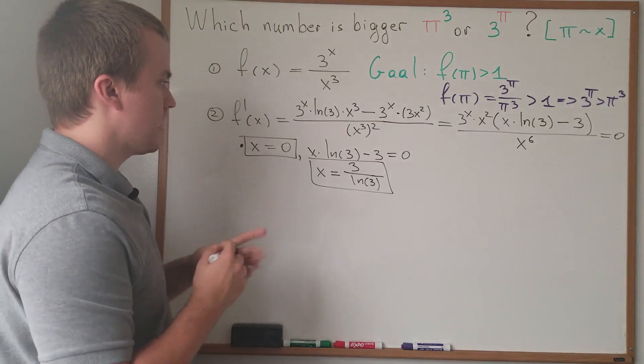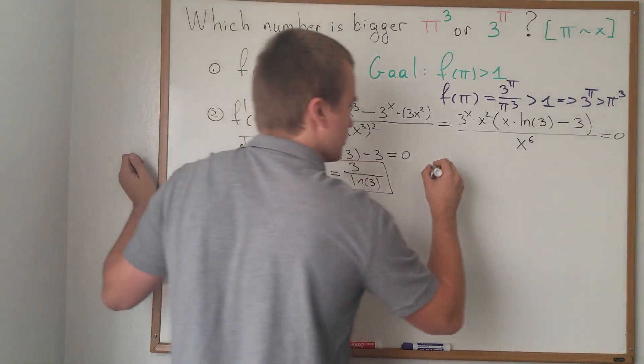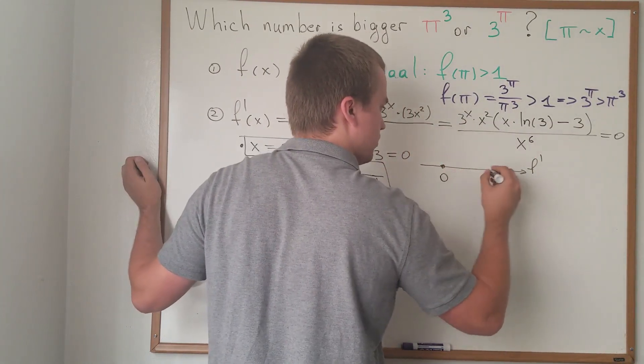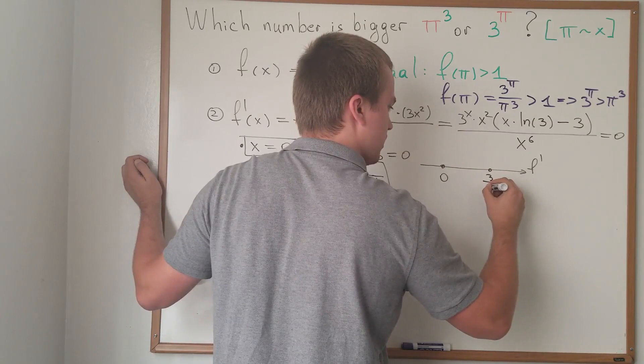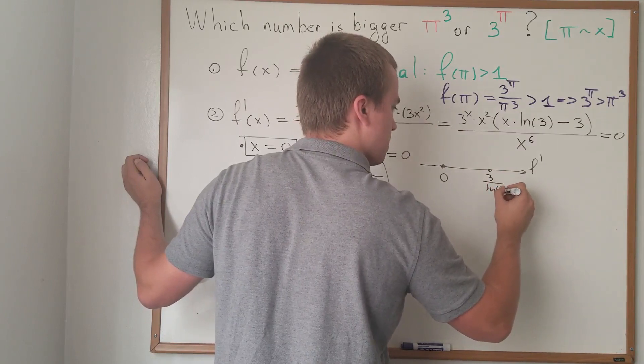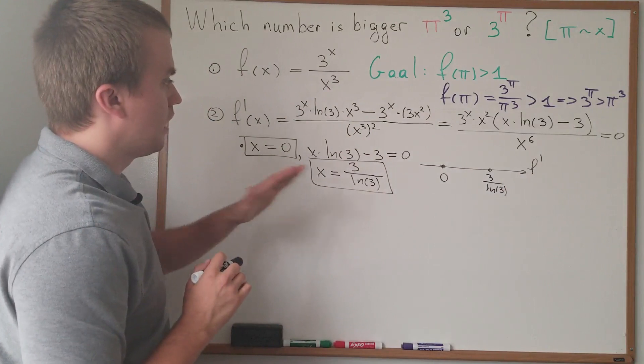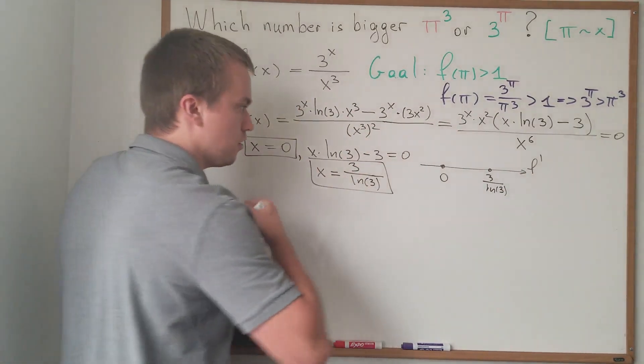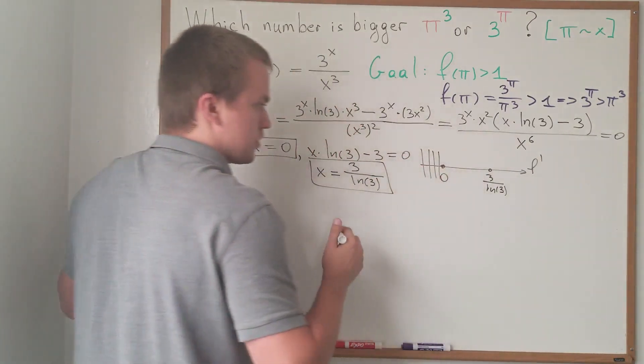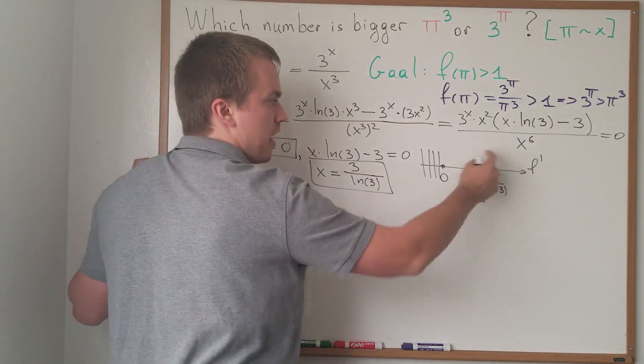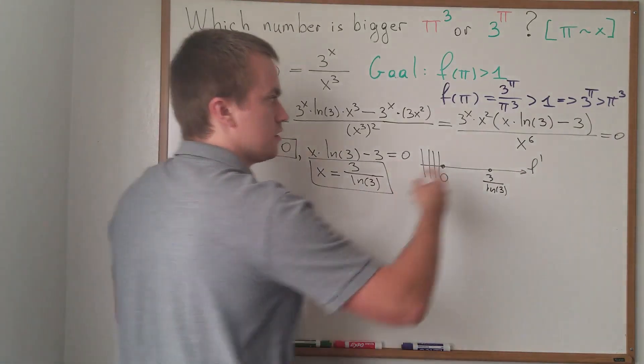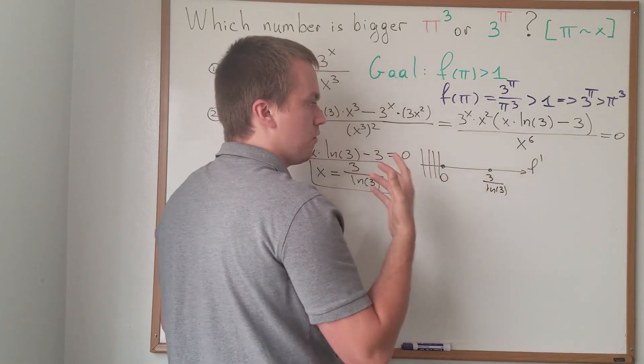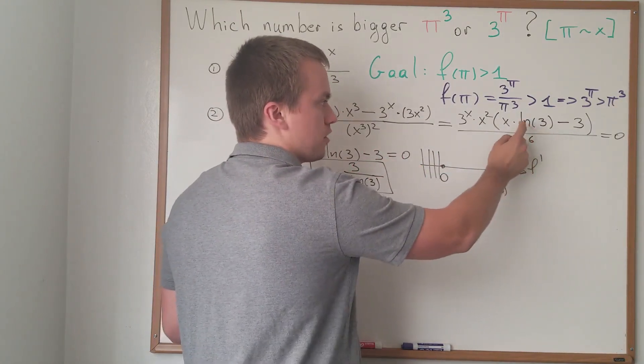And next step, let's represent this on this one-dimensional graph, f prime. Let's indicate our critical point. This is 0. This is 3 over ln(3). And actually, guys, we're not interested in anything which lies next to the left of 0. And you will understand in a second why. So, let's find our sign of f' on this interval. We can take a look at this factor. These two factors always will be positive. So, the sign of our f' depends on this factor.